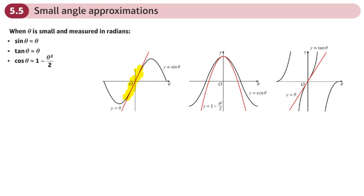But when theta is small, when it's close to zero — between maybe here and here — it's pretty close. You could approximate sine theta with theta; they're pretty much the same value. And that gives us the first small angle approximation: sine theta can be approximated to theta, when theta is small and measured in radians, not degrees.